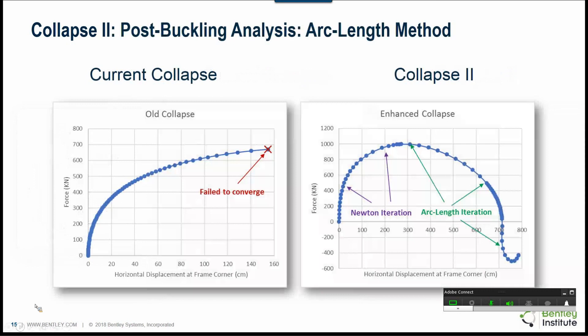So again for the same problem here, you can see that this is a load deflection curve for the same problem. The old collapse failed to converge at a very early stage, whereas the new collapse program or collapse two program continues to provide a solution way after the peak load. The new collapse program will automatically switch to the arc length iterations once the structure has reached the peak load.